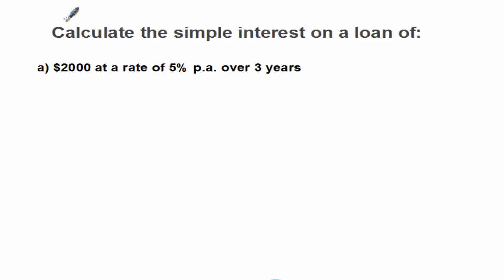Hello, in this video we're going to learn how to find the simple interest. Our question is: calculate the simple interest of a loan of $2000 at a rate of 5% per annum over 3 years.